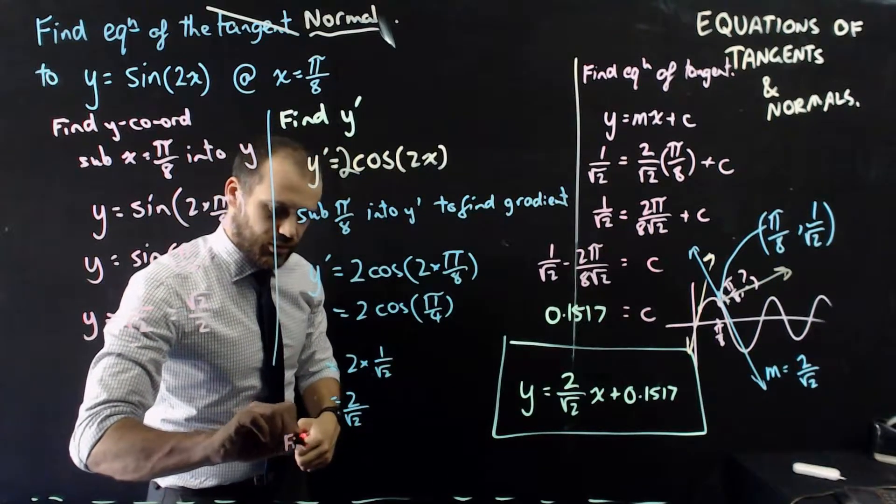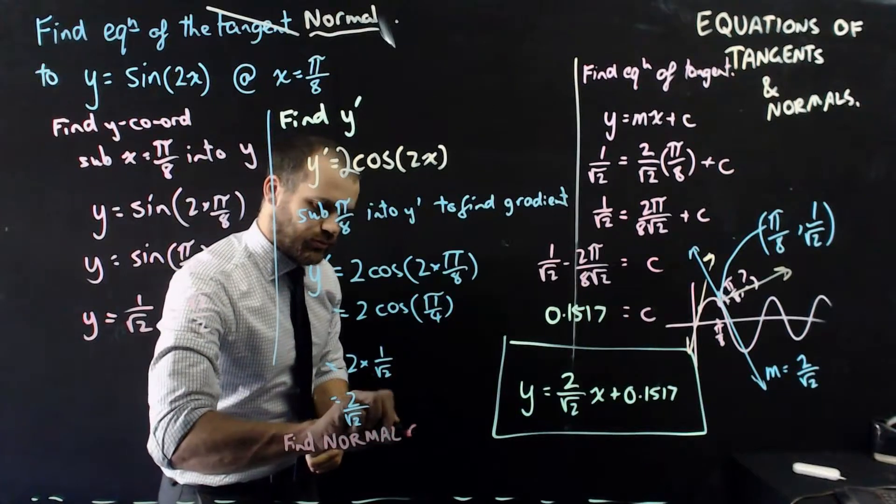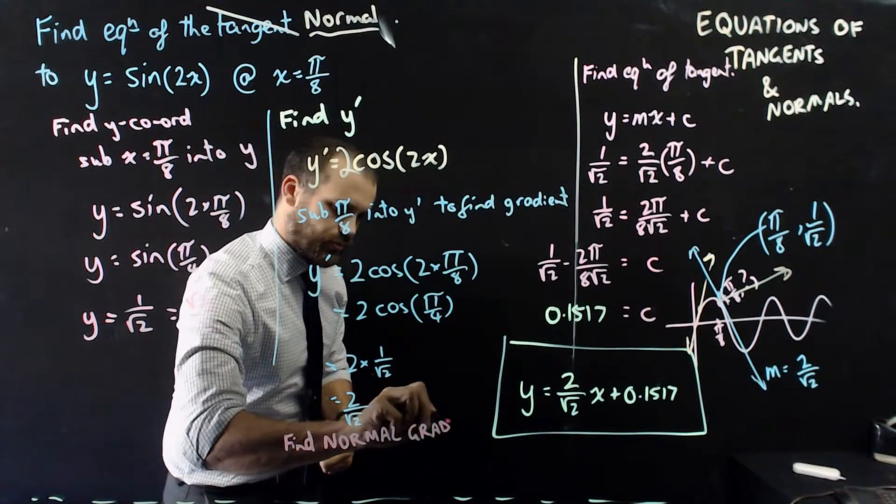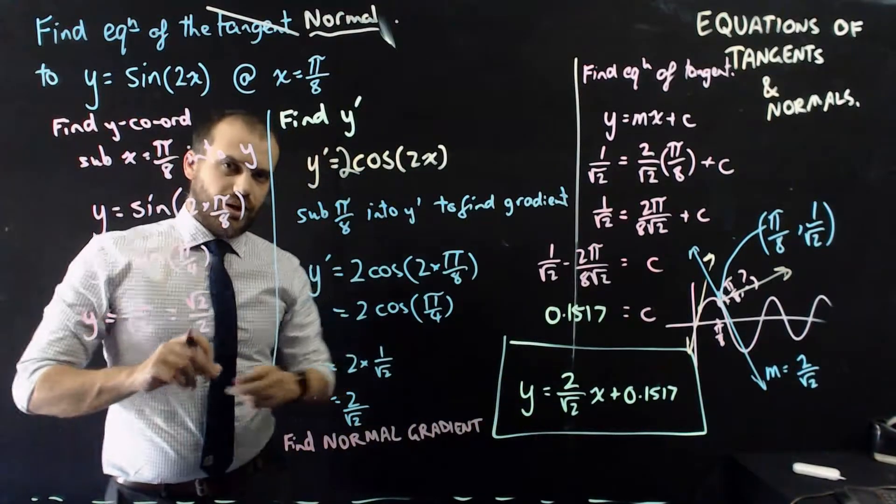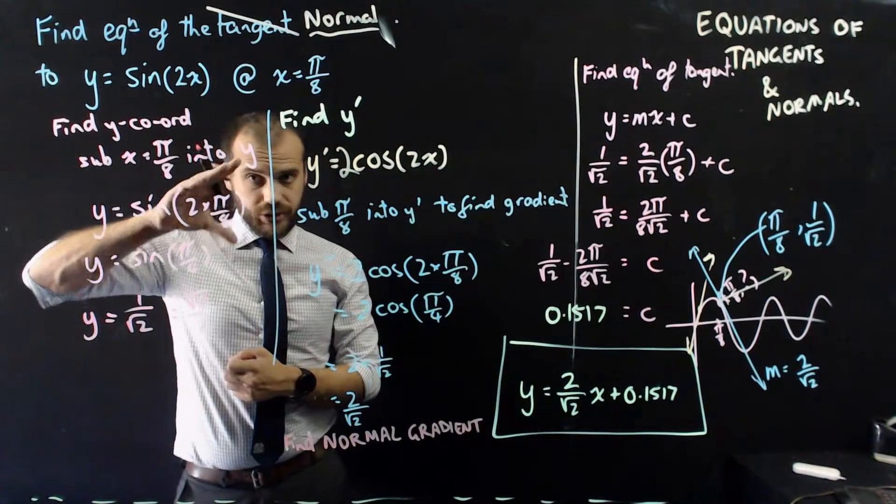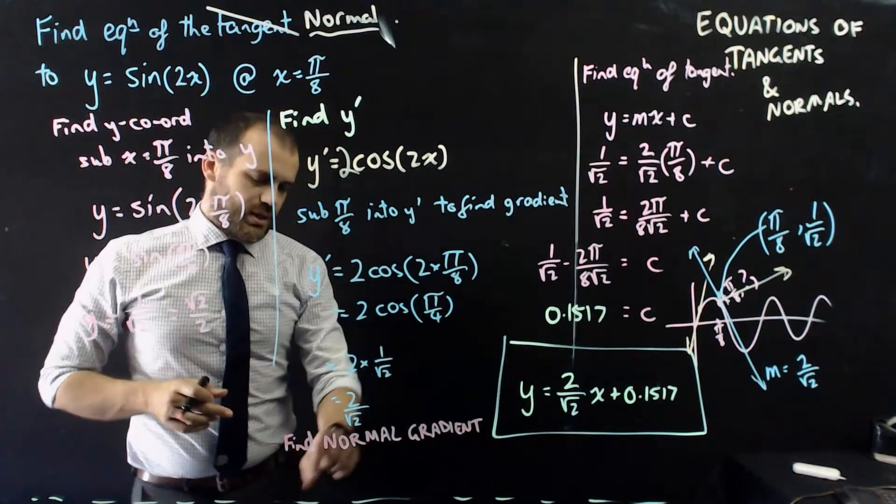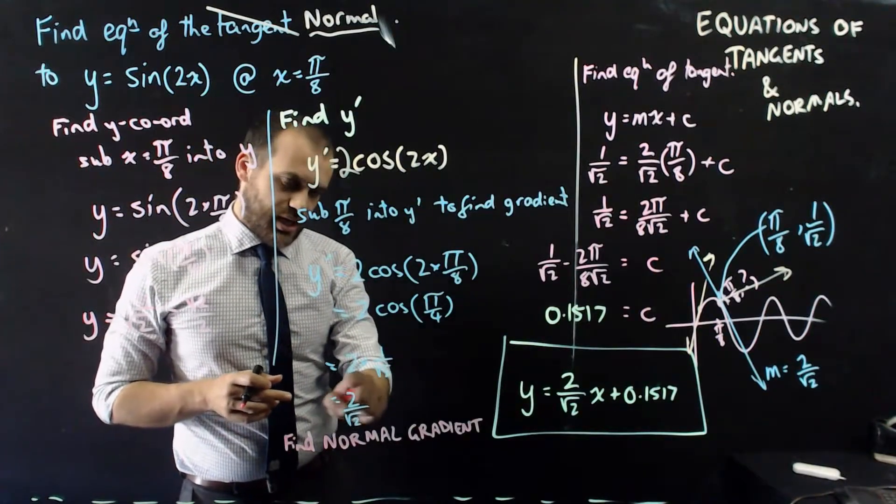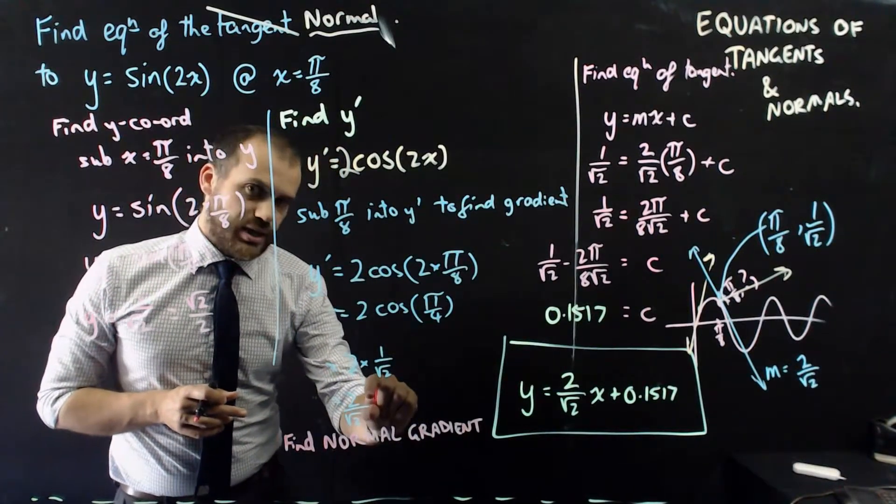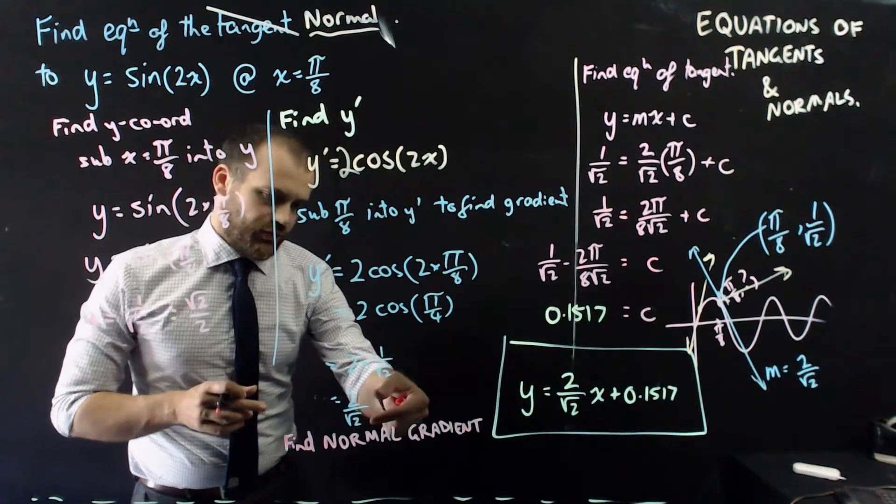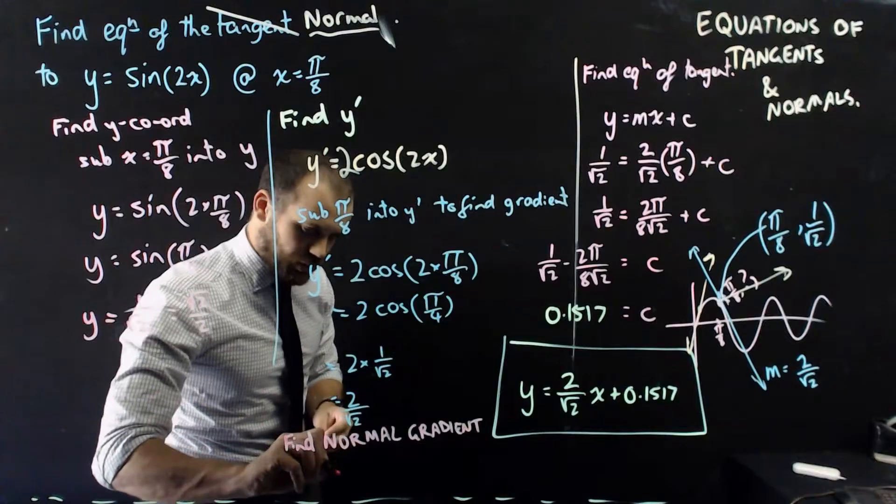Find normal gradient. Now if I want to find the normal gradient, I need to take the negative reciprocal of the tangent gradient. So what does that mean? Whatever the tangent gradient is, I need to take the fraction, I need to flip it over, and then I need to change the sign.